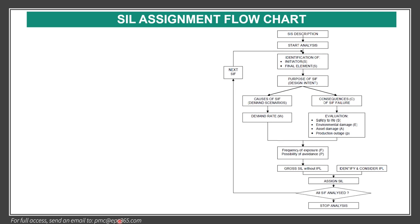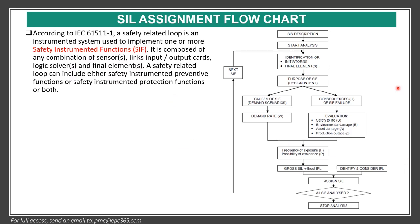Let's start by seeing the flowchart of the SIL assignment. The SIL assignment normally starts by identification of the initiation and final elements, which is according to IEC 61511. We have to identify the SIF. A SIF, or Safety Instrumented Function, is a safety-related loop — an instrumented system used to implement one or more safety instrument functions. It is composed of any combination of sensors, links, input and output cards, logic solver, and final element.